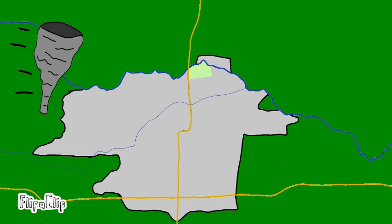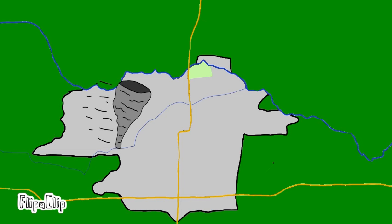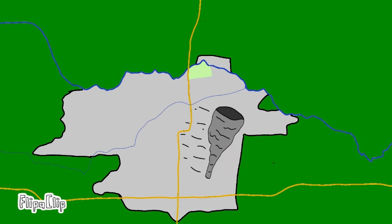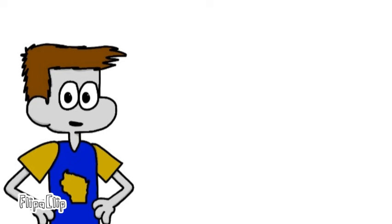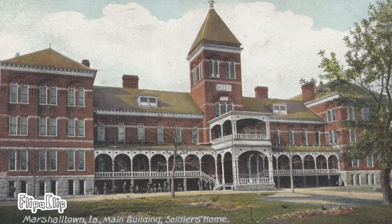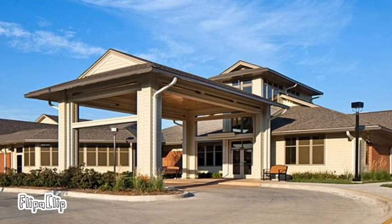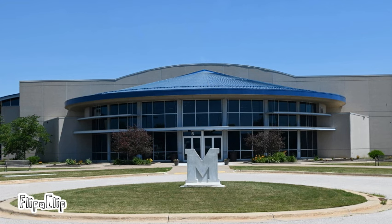Again, on July 19, 2018, another F3 tornado hit Marshalltown, this time hitting the downtown area, resulting in damage to the courthouse spiral, historic downtown buildings, and other structures. With its extensive history, Marshalltown still continues to grow and house businesses, as it is the home to the Iowa Veterans Home and Marshalltown Community College, which was founded in 1927.